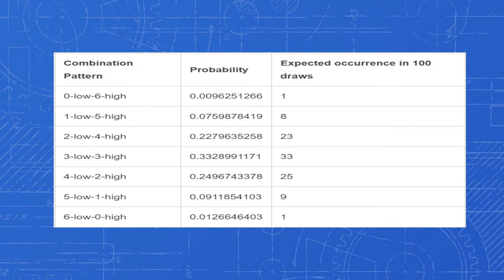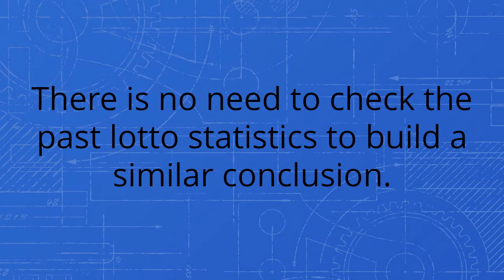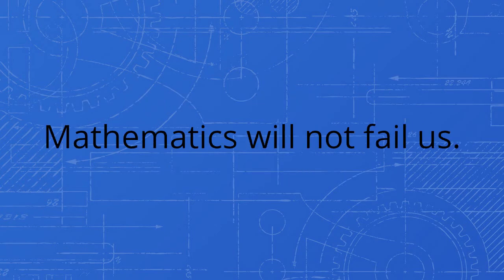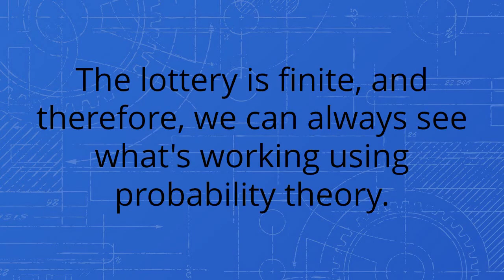Then we will come up with the complete list of low-high combination patterns and their corresponding probability. The best patterns are two low four high, three low three high, and four low two high. Playing with the rest is just a waste of money. There is no need to check the past lotto statistics to build a similar conclusion. Mathematics will not fail us. The lottery is finite and therefore we can always see what's working using probability theory.